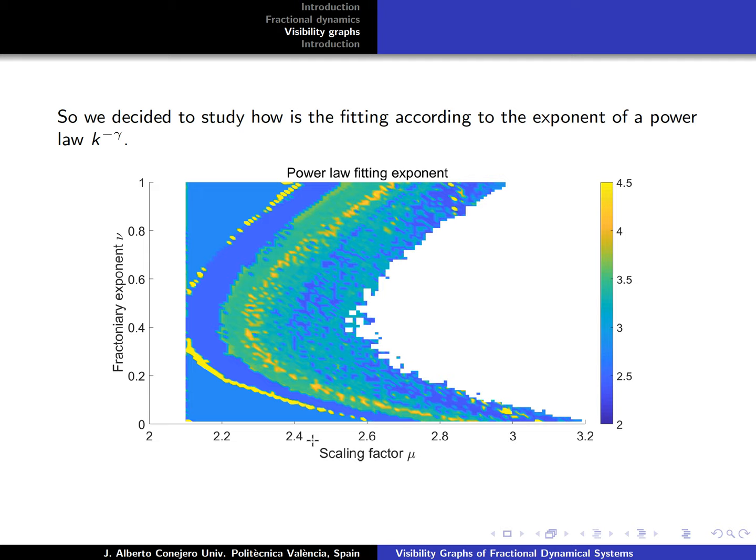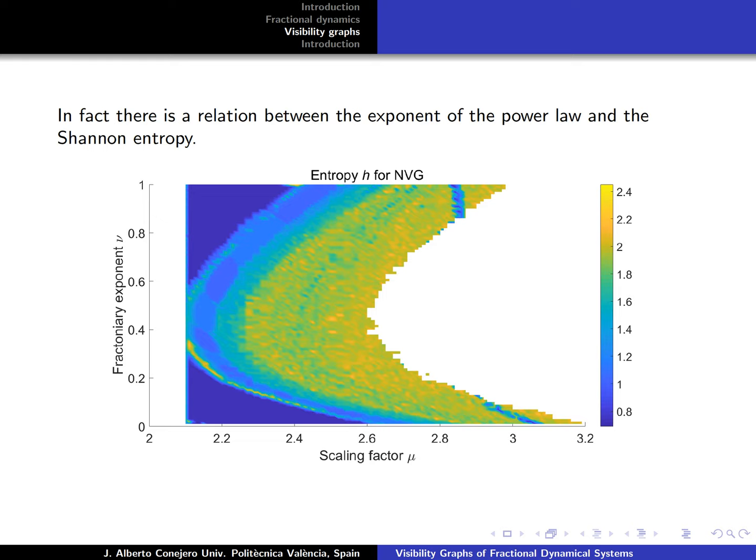Moreover, this is interesting because this exponent is also connected with the Shannon entropy of the graph. If we compute the entropy of the natural visibility graphs, we also have these regions of curves and we have here represented what are the values of the entropy in each case.